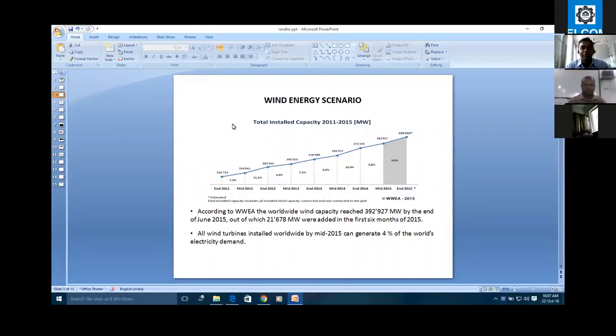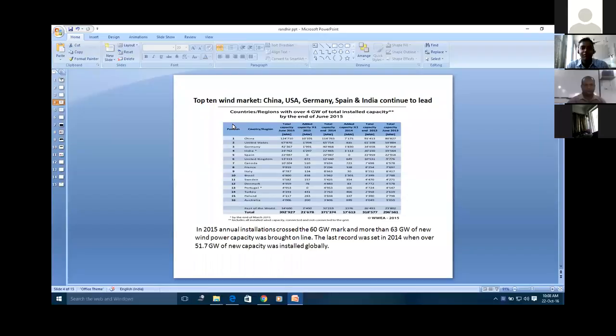4% electricity demands was the market all over the world. The first one is 63 gigawatts, but in 2015 it was 51.7 gigawatts. So we can see the change.